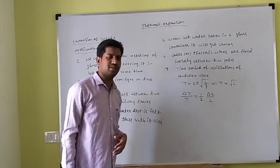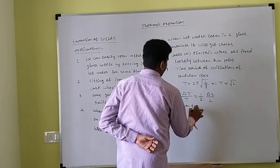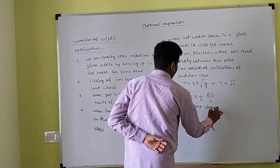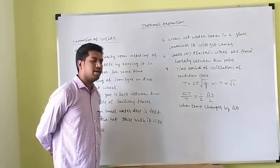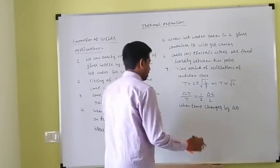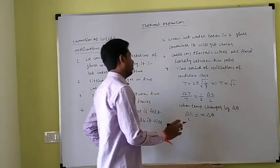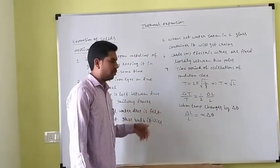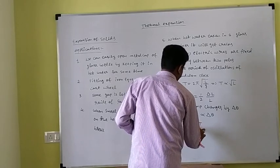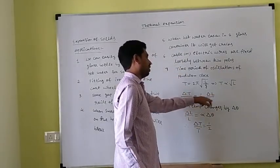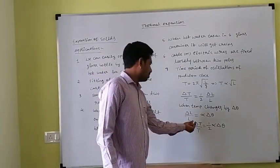From the approximation method, when temperature changes by Δθ, the length of the pendulum changes such that Δl/l = α·Δθ. So we can write ΔT/T = ½·α·Δθ. This gives the fractional change in time period due to a change in temperature.